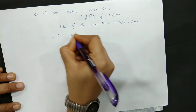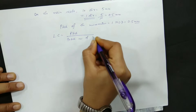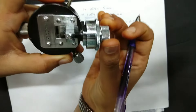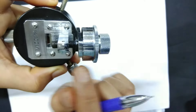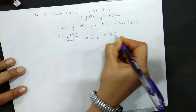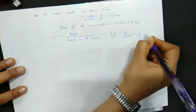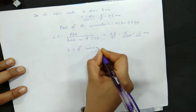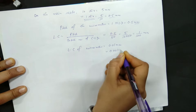The least count formula is pitch divided by total number of circular scale divisions. On the circular scale, divisions go up to 45 and then back to 0, so total number of circular scale divisions are 50. Therefore, least count equals 0.5 divided by 50, which is equal to 1/100 mm. So the least count of the micrometer comes out to be 0.01 mm, or 0.001 centimetre.